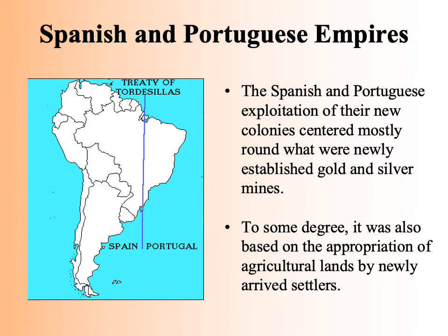At some point, in order to avoid conflict between the Spanish and Portuguese, they negotiated with the help of the papacy the Treaty of Tordesillas, whereby everything to the east of the line drawn on the map would go to Portugal, and everything to the west of the line would go to Spain. They didn't fully appreciate the fact that the vast majority of the landmass of the Americas was to the west of the line, so Spain actually came out very much on top with that negotiation. From that point forward, both were able to fully exploit the territories they brought under their control.